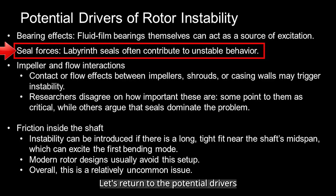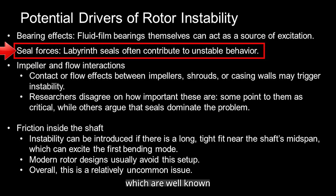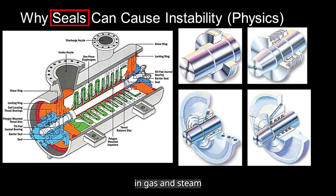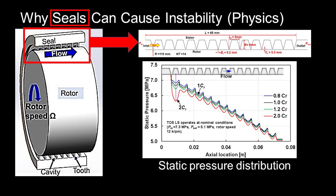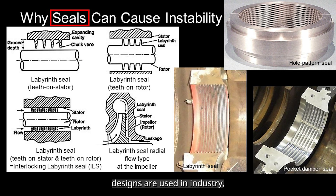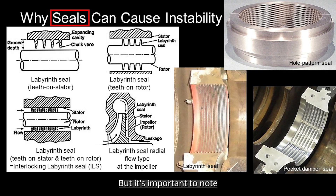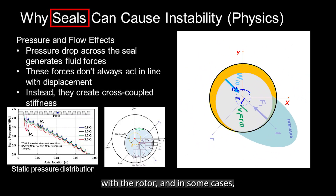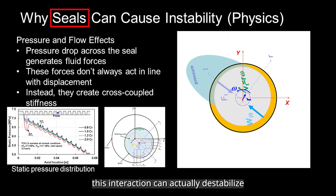Let's return to the potential drivers of rotor dynamic instability. This time we will focus on seal forces, in particular labyrinth seals, which are well-known contributors to unstable behavior. Seals are essential in gas and steam turbines, compressors, and pumps. Their primary role is to limit leakage, controlling the flow of fluid from high-pressure regions to low-pressure regions, which directly improves overall machine efficiency. Several seal designs are used in industry, including labyrinth seals, pocket damper seals, hole pattern seals, and many others. Importantly, seals are not just passive leakage control devices — they also interact dynamically with the rotor, and in some cases this interaction can actually destabilize the system.